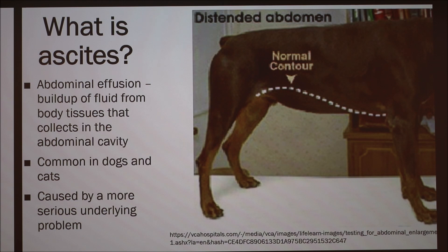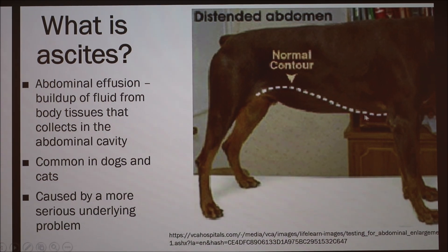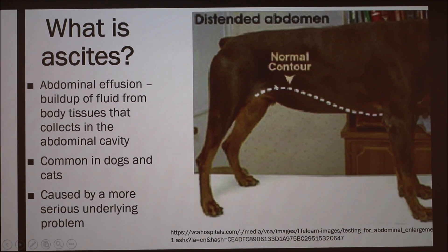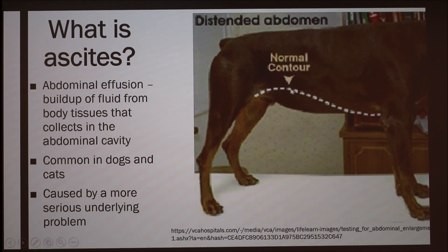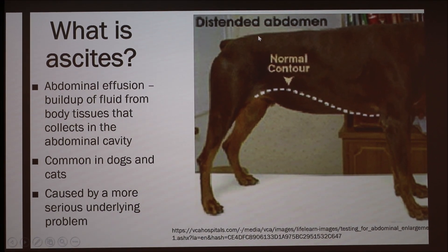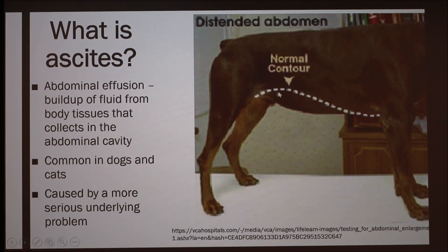It's common in dogs and cats, and it's usually caused by something more serious. Normally the abdomen comes up towards the pelvis area, but here it distends down past that normal contour line.